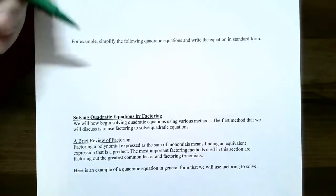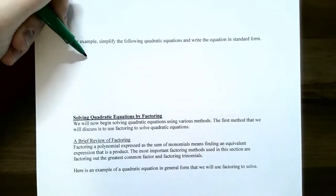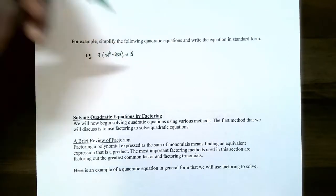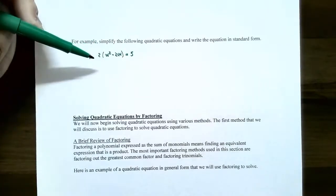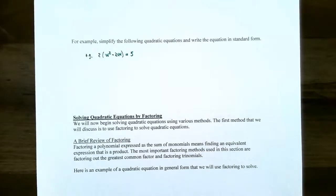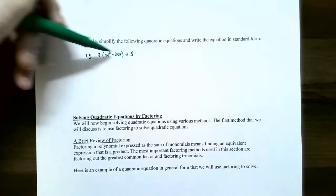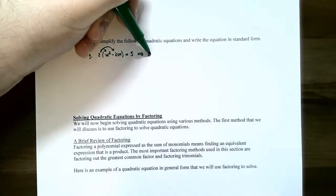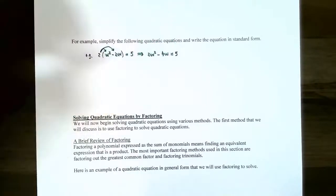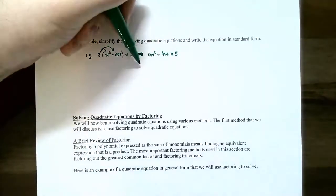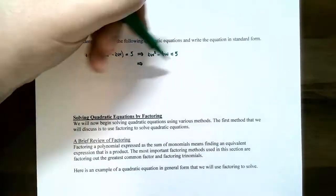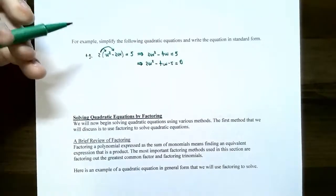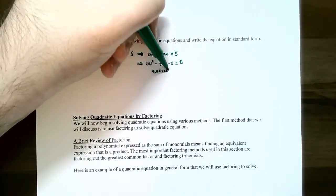For example, let's rewrite this equation into general form: 2 times the quantity w squared subtract 2w equals 5. There's a w squared term and the highest power on w is two, making it a quadratic equation, but it's not in general form. Distribute the 2 through the parentheses: 2w squared subtract 4w equals 5. It's still not in general form — the equation is not equal to zero. Subtract 5 from both sides: 2w squared subtract 4w subtract 5 equals zero. This is now a quadratic equation in general form.